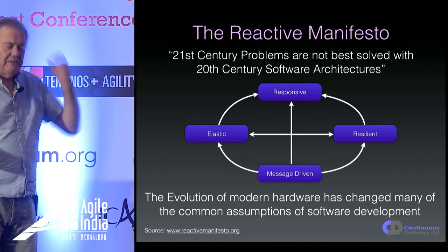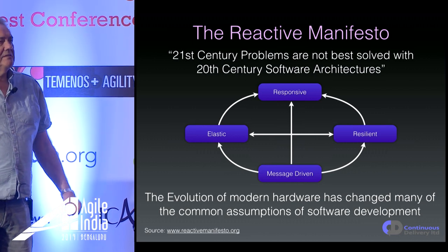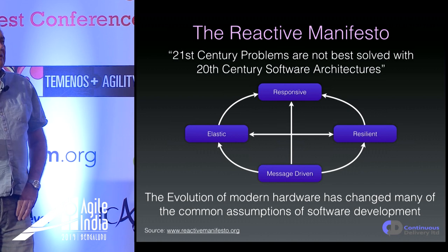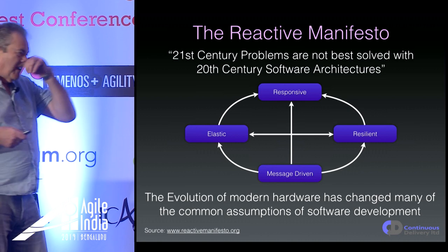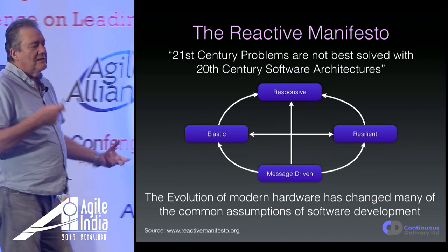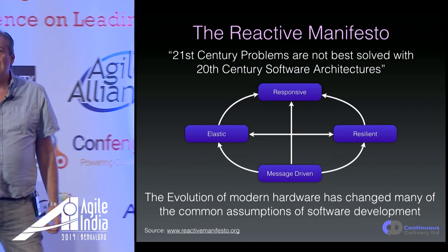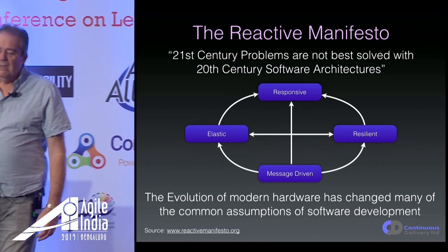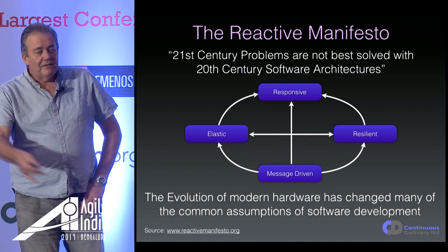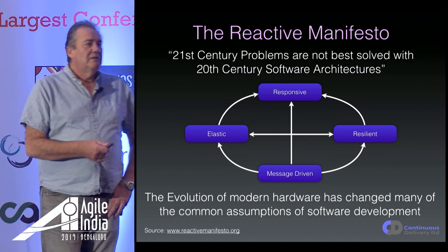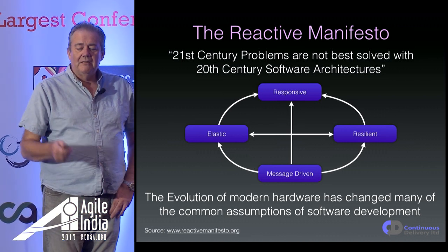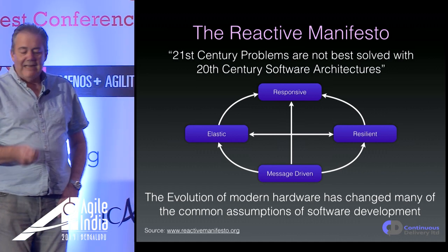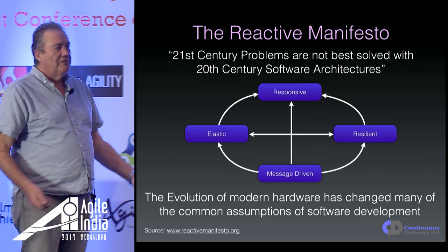As I mentioned, I got involved in the Reactive Manifesto. The idea was to capture what we'd learned about building different kinds of systems. Fundamentally, it describes the behaviors that reactive systems are: responsive, resilient, elastic, and message-driven. This is a kind of hyper-microservice architecture — one way of thinking about it.